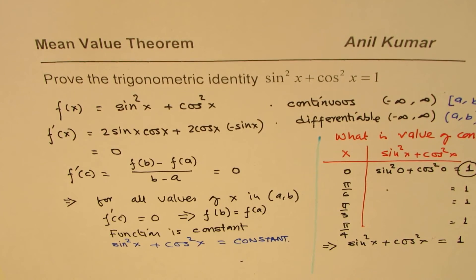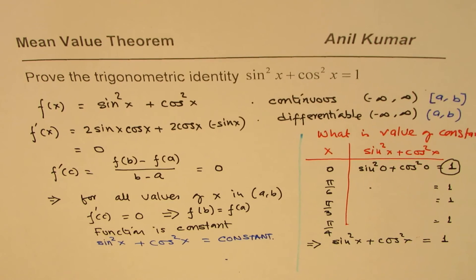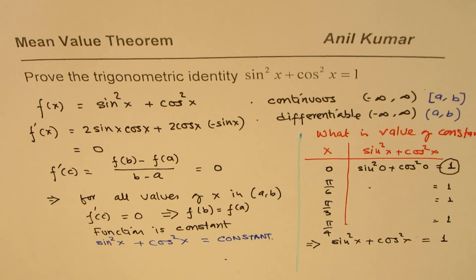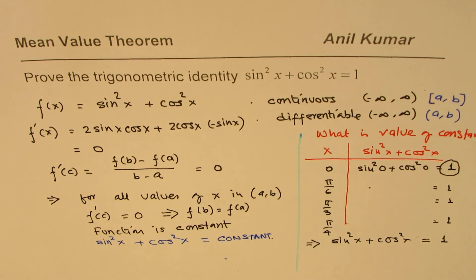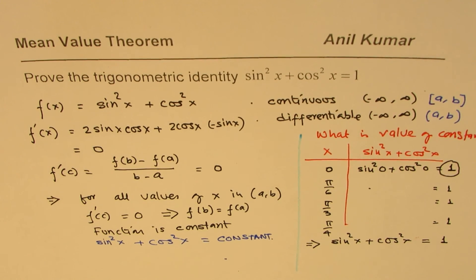That is how we can apply the mean value theorem to prove trigonometric identities. I purposely took a very simple case — you could prove other identities in this fashion. I'm Anil Kumar, and I hope that helps. Thank you, and all the best.